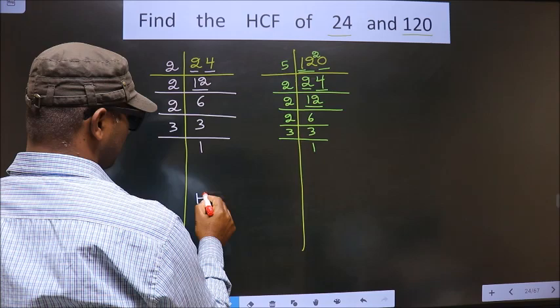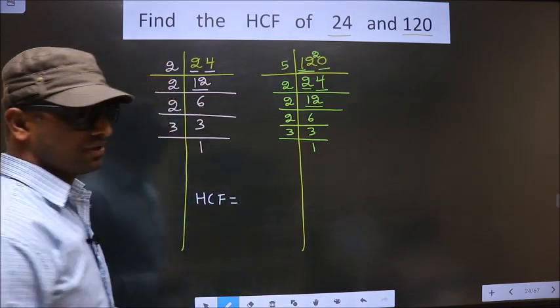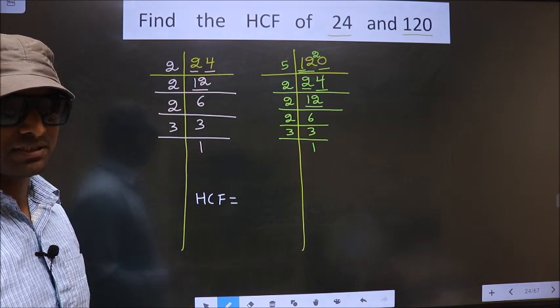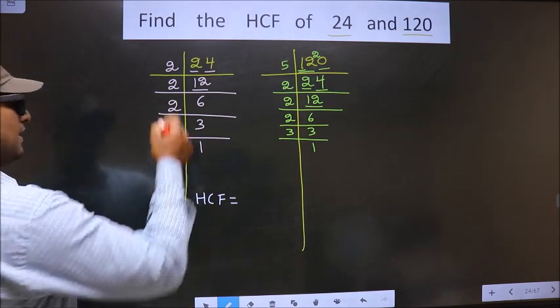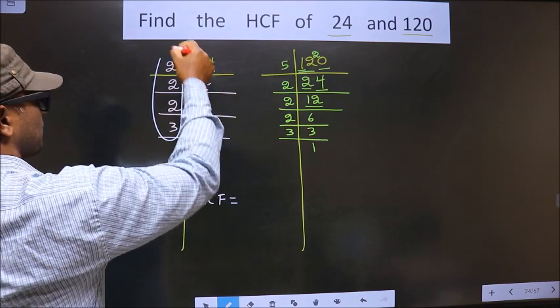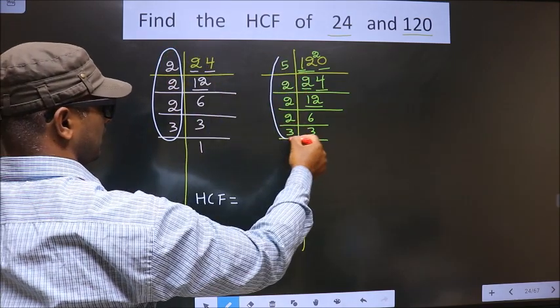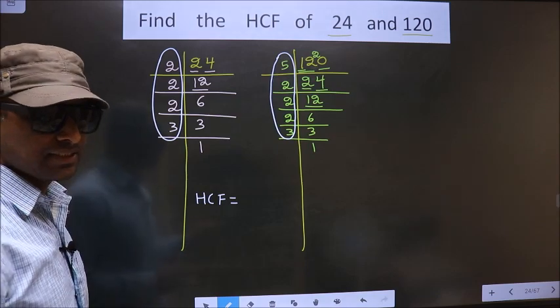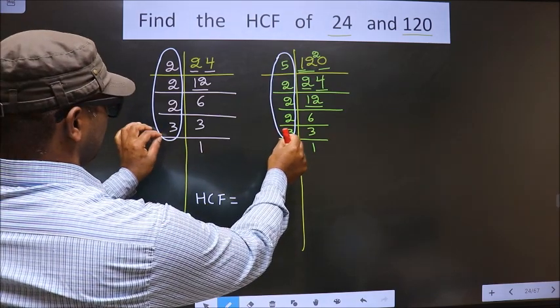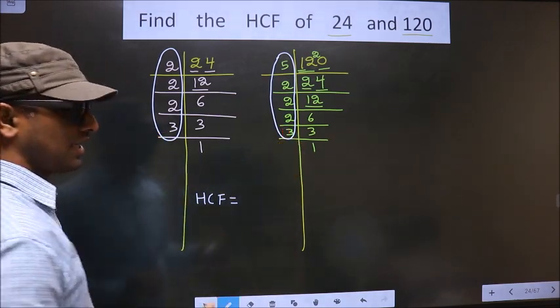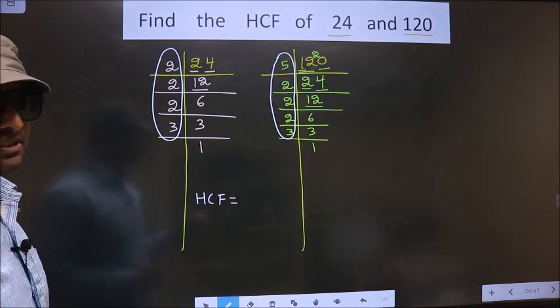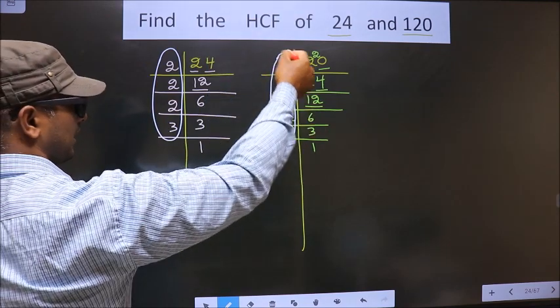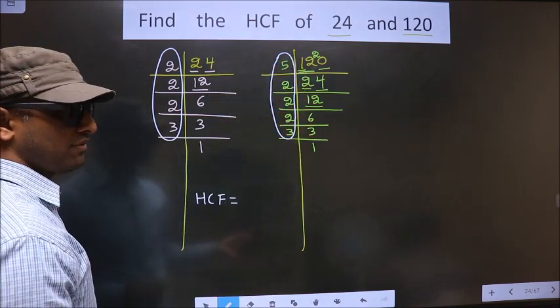So now, our HCF is - HCF is the product of numbers that are present here and also here. So now we should find the numbers that are present in these two places. So let us find.